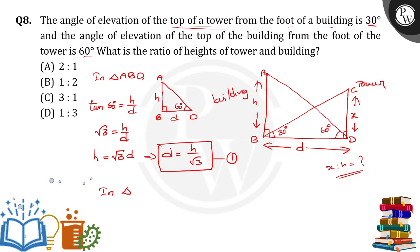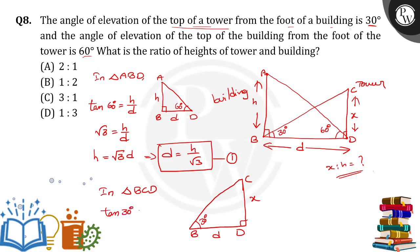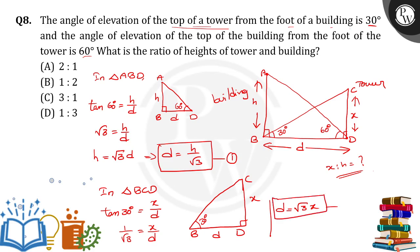Now take another triangle — triangle BCD. The distance BD is D, the height of the tower is X, and the angle at B is 30 degrees. Applying tan 30: tan 30 equals X by D. Tan 30 is 1 by root 3, so 1 by root 3 equals X by D. From this we can rewrite it as D equals root 3 times X — taking as equation number 2.